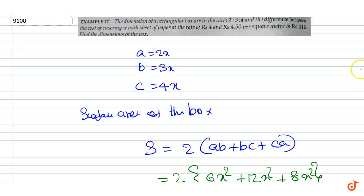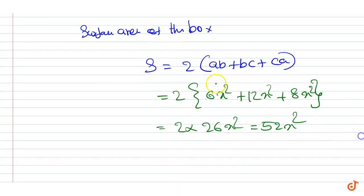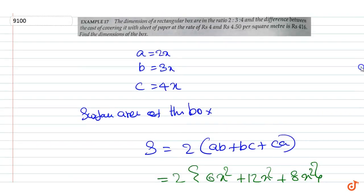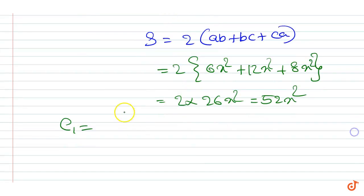Now it is given that C1, the cost of covering the sheet at a rate of 4, equals 4 times the surface area, equals 4 into 52x², equals 208x².